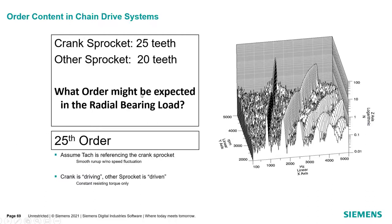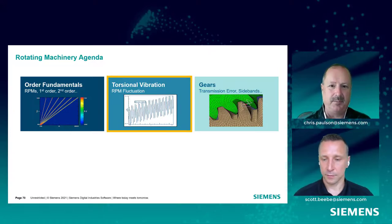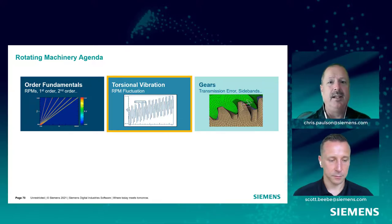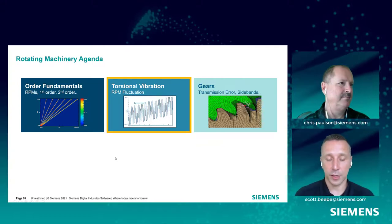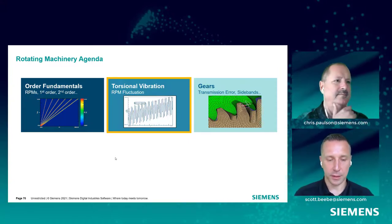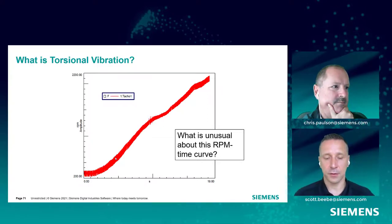We've talked about fundamentals of orders with a couple of brain teasers. Moving on to the next part of the agenda — torsional vibration, including encoder tips. Now we're going to talk about torsional vibration and what we can do looking at RPM fluctuation. Let's look at an RPM signal. If I showed you this RPM signal, Chris, what's unusual about it — what's maybe not expected? Being the simulation guy, it looks like my integrator for multibody dynamics is going to go really slow because there's a lot of chatter. It's not smooth.